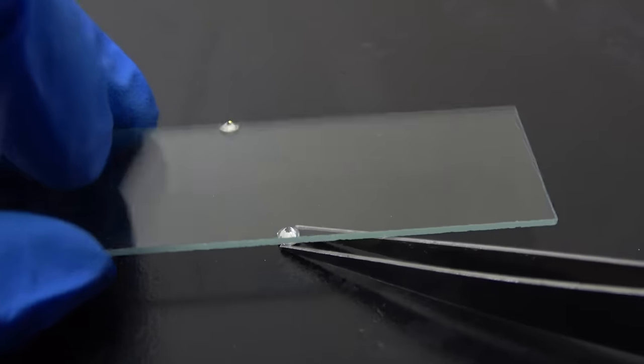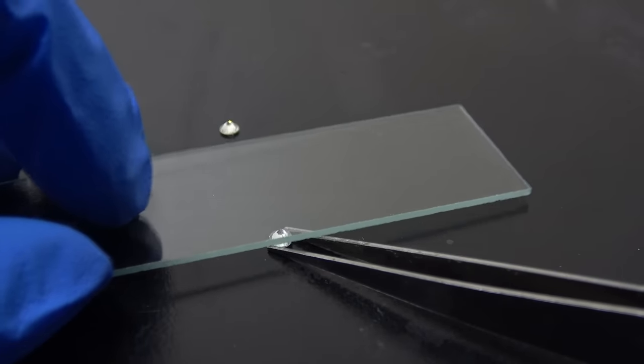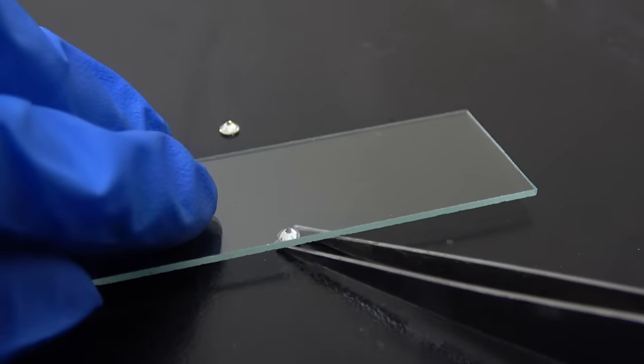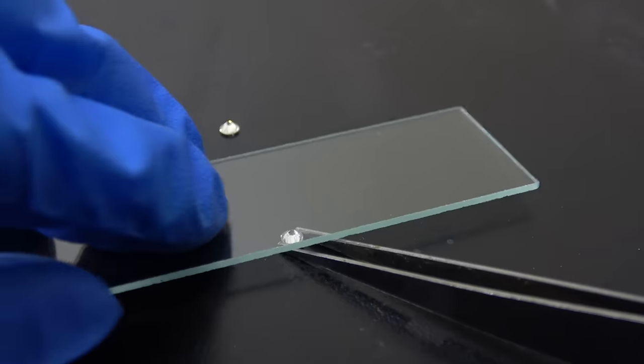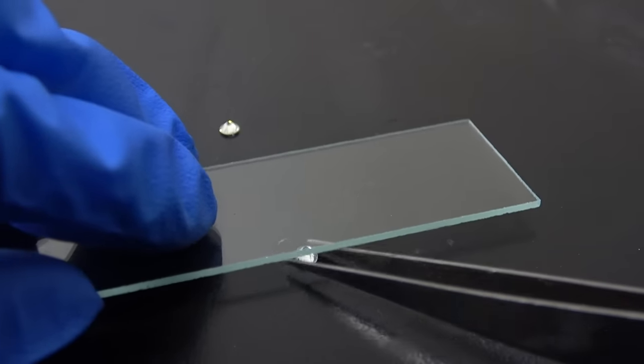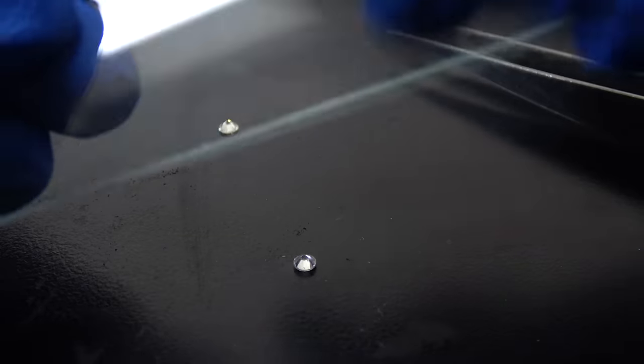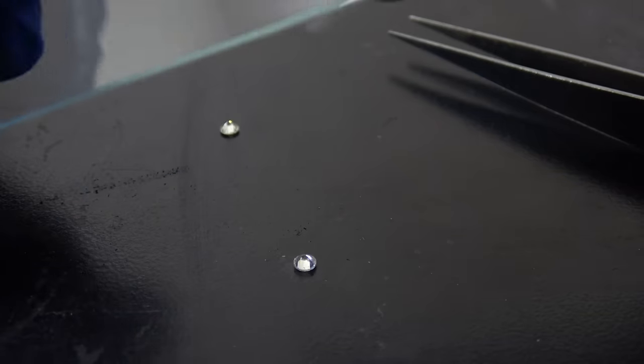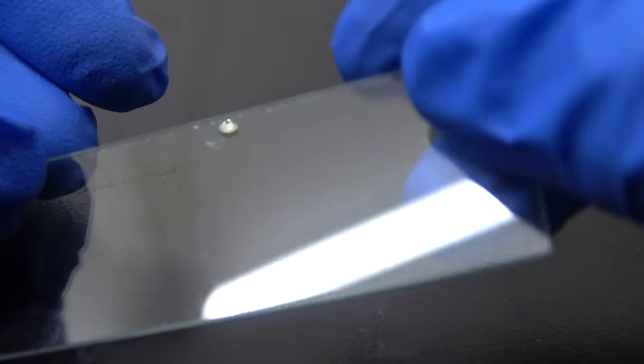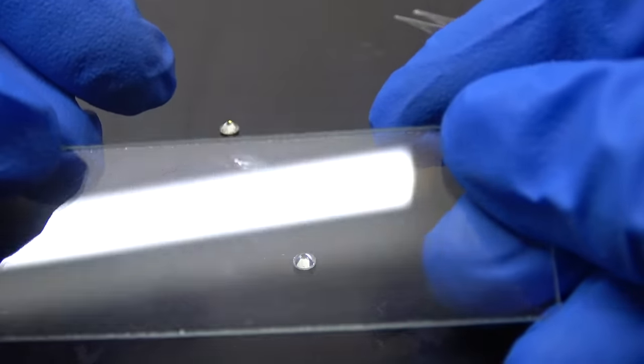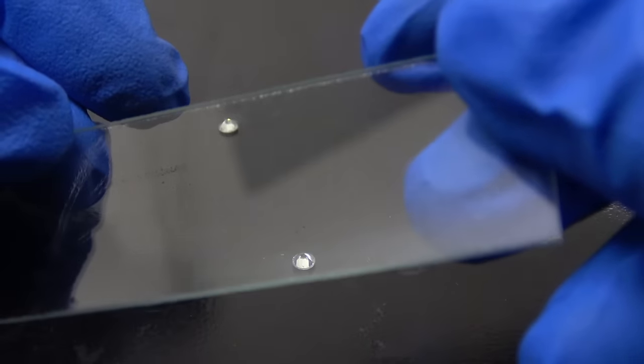So this piece of microscope slide should stand no chance against them if they are real diamonds. Something is already happening. It's a scratch. This is definitely a scratch. So diamond A passed this test.